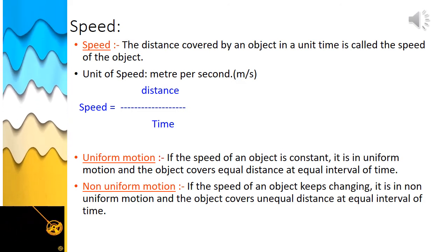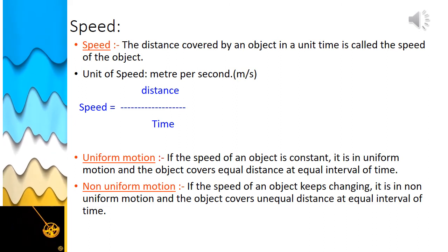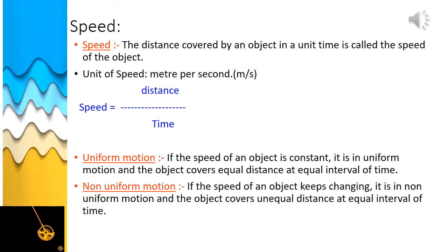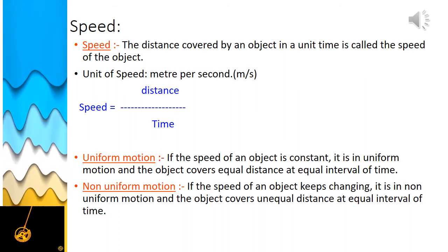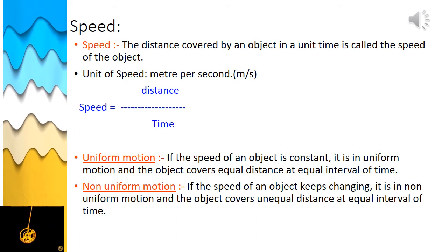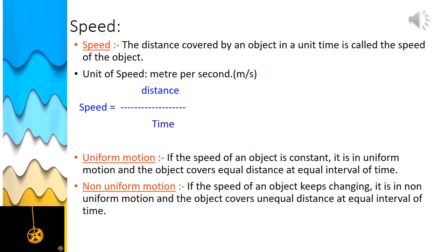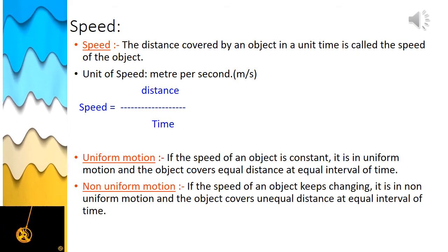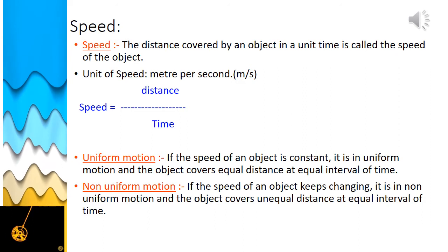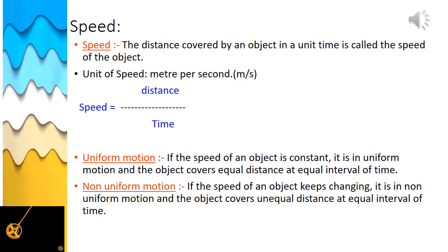The standard unit of distance is meter and that of time is second, so the standard unit of speed is meter per second. The speed of fast-moving objects like cars, trains, and aeroplanes is usually expressed in kilometers per hour.